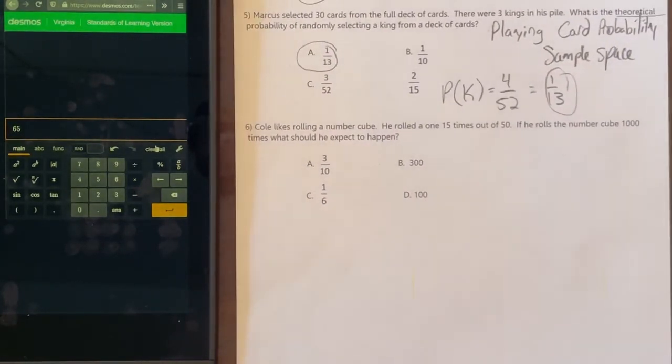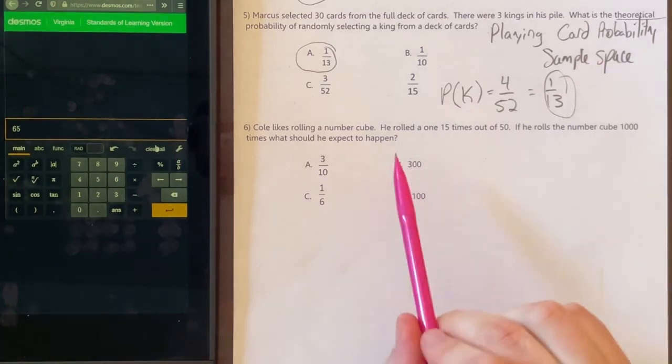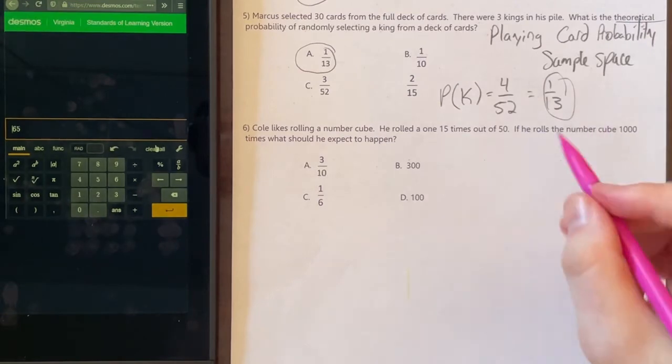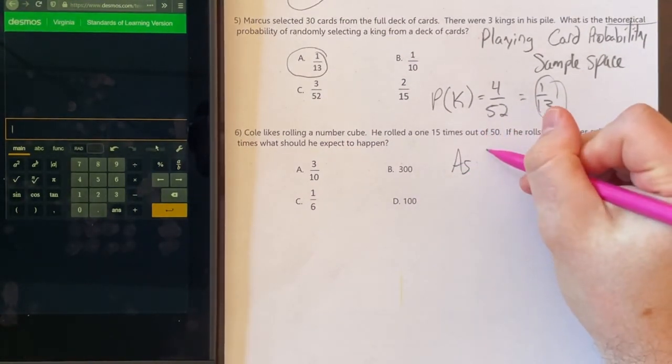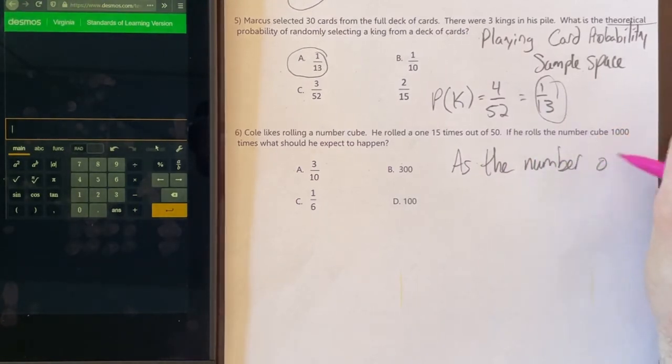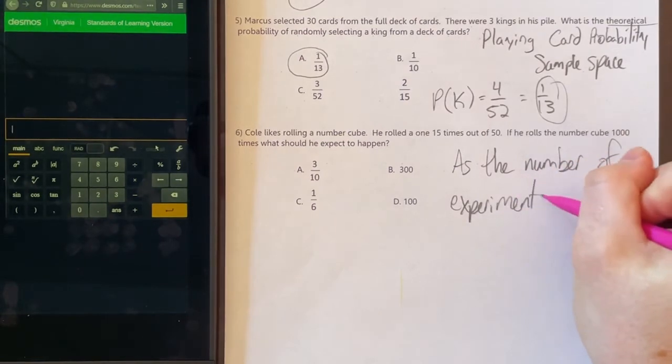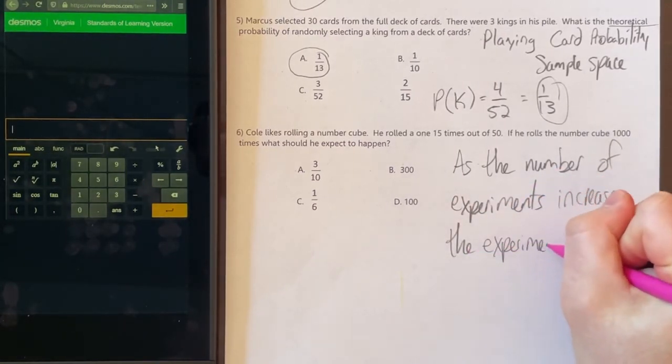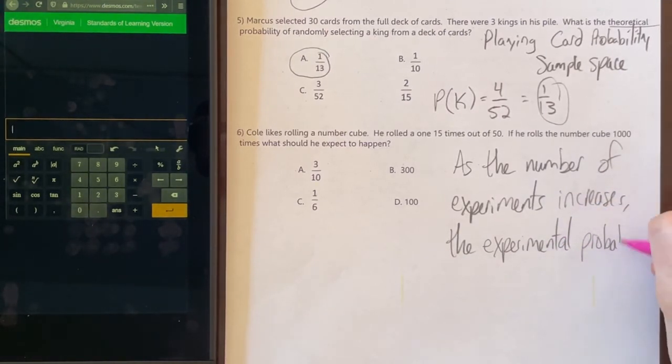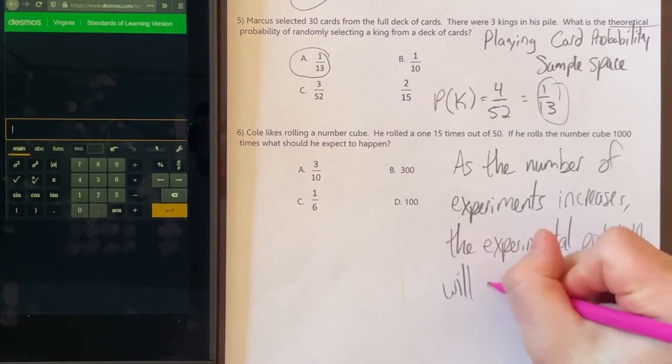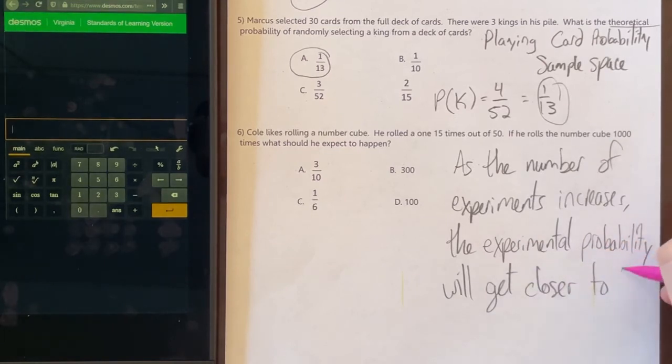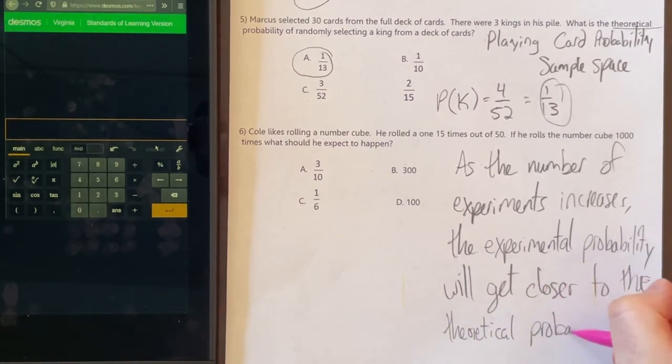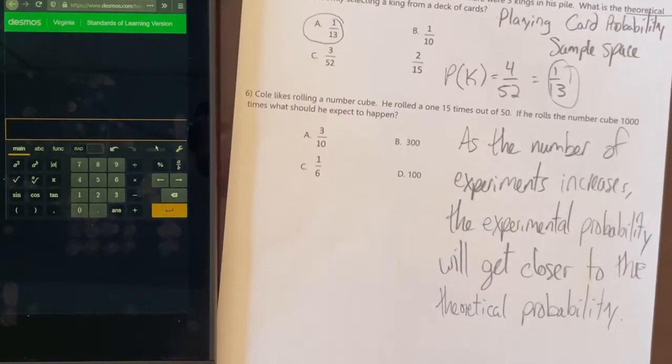And lastly, for number 6, it says Cole likes rolling a number cube or a die. He rolled a 1 15 out of 50 times. If he rolls the number cube 1,000 times, what would he expect to happen? As the number of experiments increases, the experimental probability will get closer to the theoretical probability.